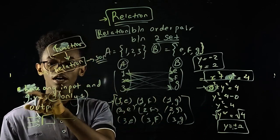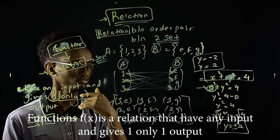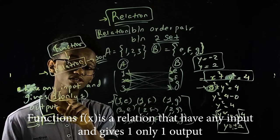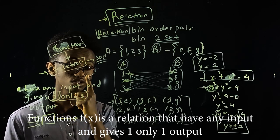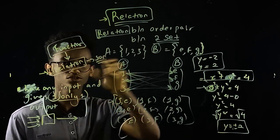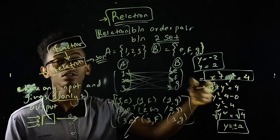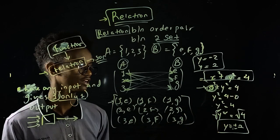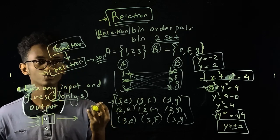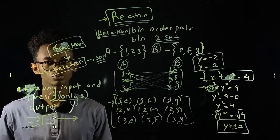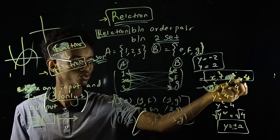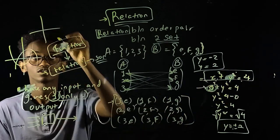A function must have any input give only one output. So because x² + y² = 4 gives two outputs for one input, it is not a function. To verify this more generally, we can use the graph of x² + y² = 4 and apply the vertical line test.